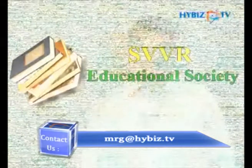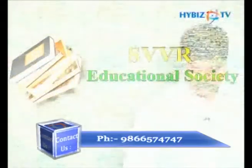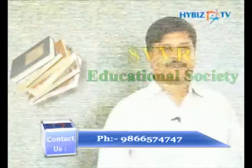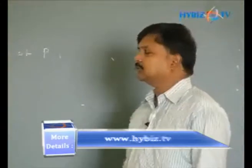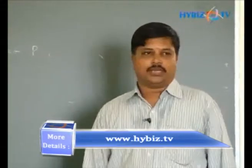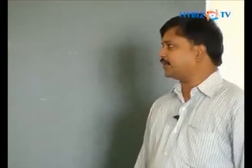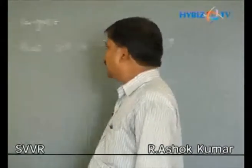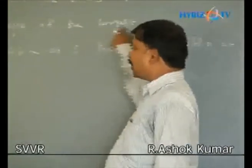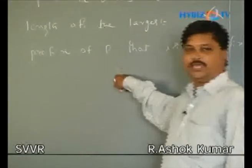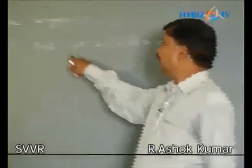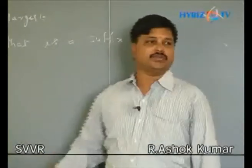Let us discuss the failure function. The given pattern p is equal to a b a b a d a. The failure function definition gives the length of the largest prefix of p that is also a suffix of p. Now let us consider and find the failure function for the given pattern.